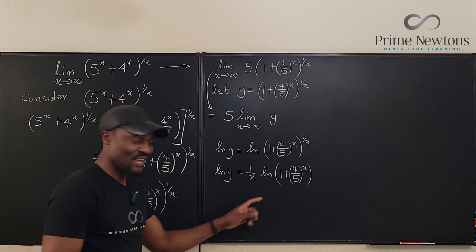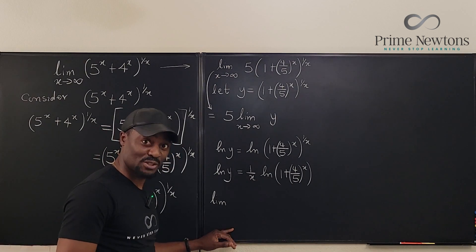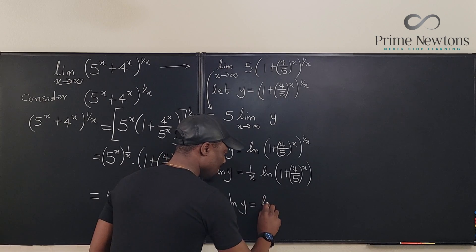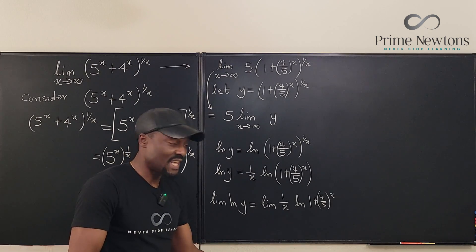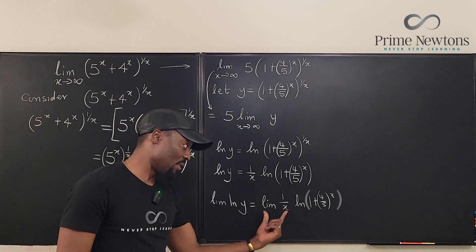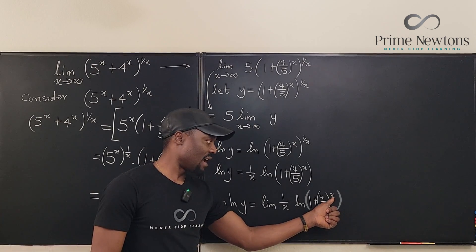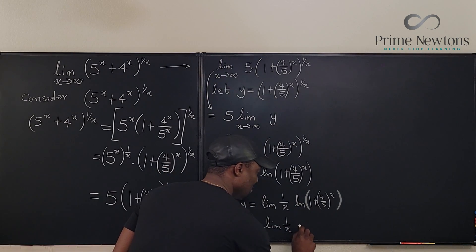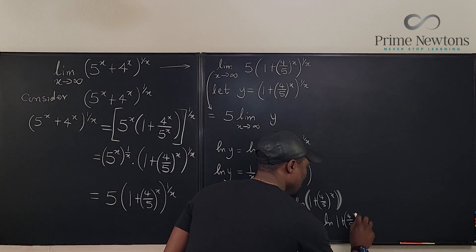Now I can take the limit of both sides. Whenever you take the limit of a product, you can apply the product rule for limits, which states the limit of a product is the product of the limits, as long as each limit exists individually. I know the limit of 1/x as x goes to infinity is 0. So I can say this equals the limit of 1/x multiplied by the limit of ln(1 + (4/5)^x).